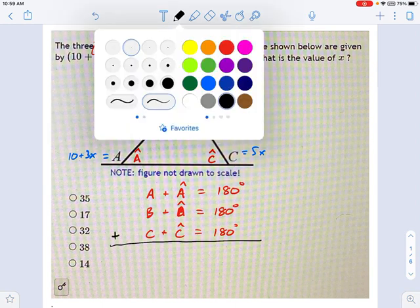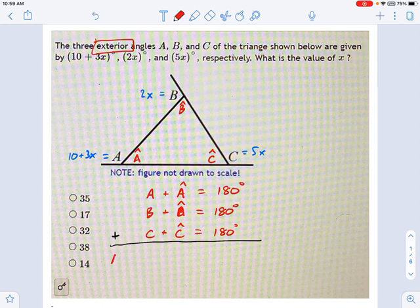So let's see what I get. I get A plus B plus C. That came from this left column. I also get A hat plus B hat plus C hat. That's this column right here. Those are the interior angles. And on the right, I get 180 plus 180 plus 180. That's 540.